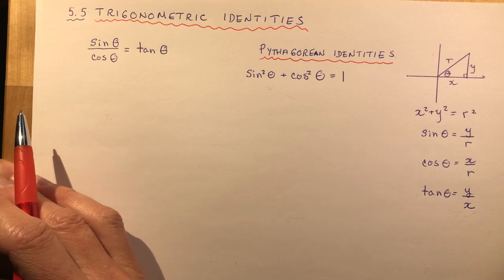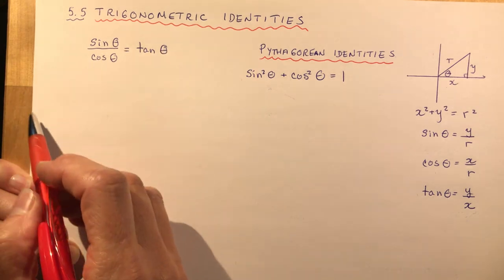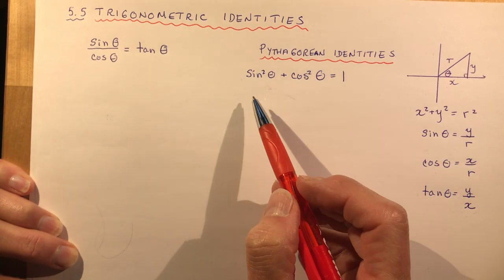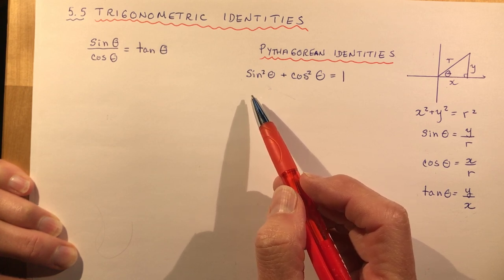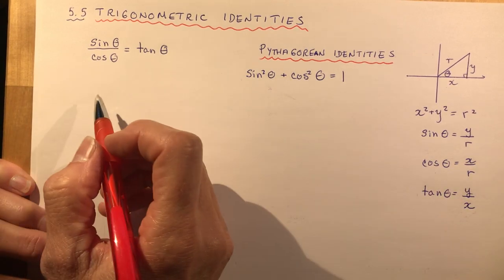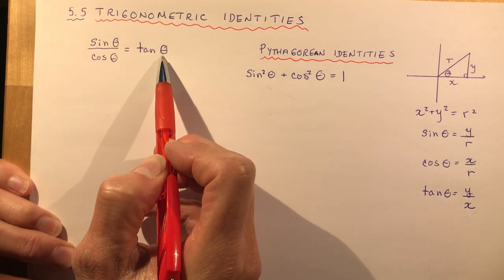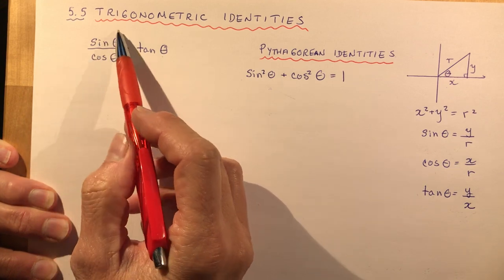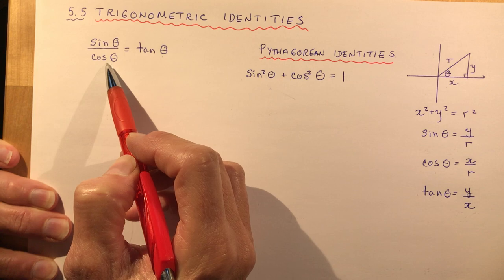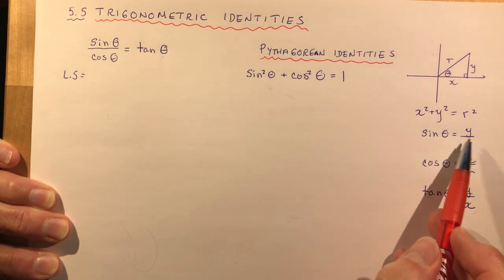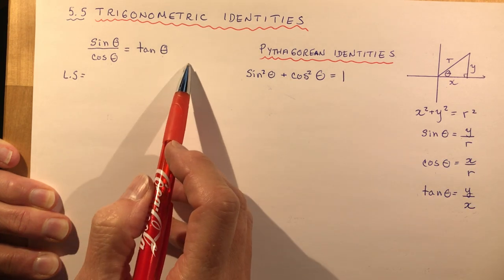The first time you prove these using X, Y, and R is just to prove that these identities exist. Once you've done that once, it's highly unlikely you'll be asked to use X, Y, and R to prove them again. At a unit test, the teacher will generally ask you to prove an identity but not in terms of X, Y, and R. So if I wanted to prove that sine theta over cos theta equals tan theta, the first thing you need to do is decide which side is more complex — that would be sine theta over cos theta. We're going to replace it with these relationships.